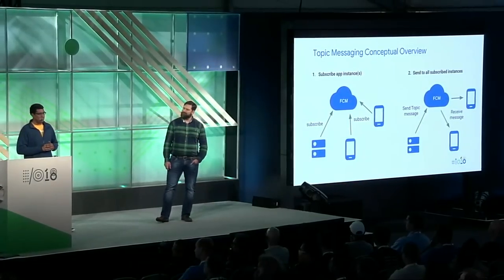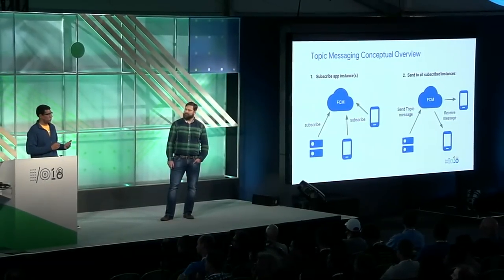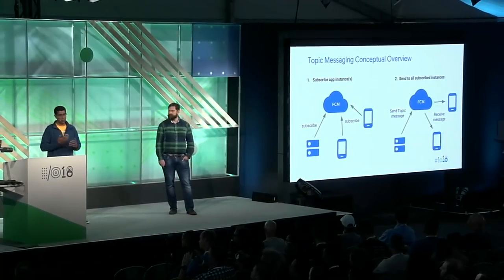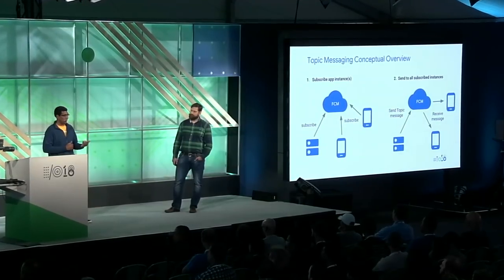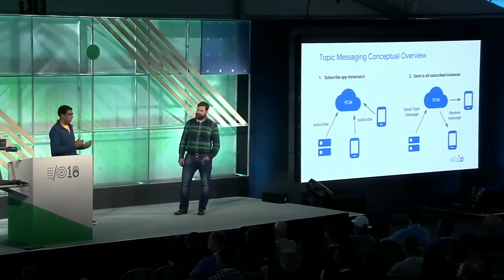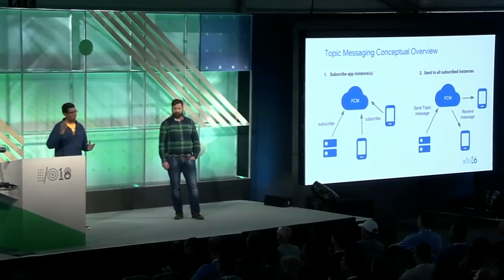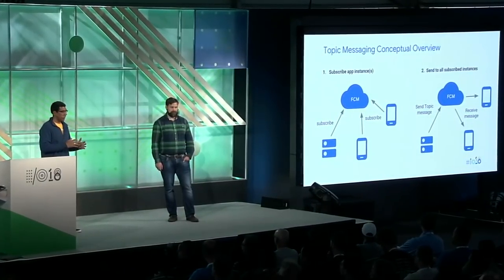Another popular feature in FCM is topic messaging. A lot of developers use this when their use case is to send the same type of notification to a large number of devices. Common examples include a news app sending notifications to folks interested in certain topics, or a sports app notifying users about updates on their team. Every device subscribes to a topic with one line of code on the client side. Instead of sending one message per device, you send one message to the FCM cloud, and it fans out to all devices subscribed — making it scalable for developers to reach a large number of devices.